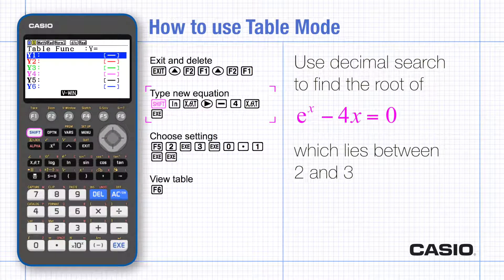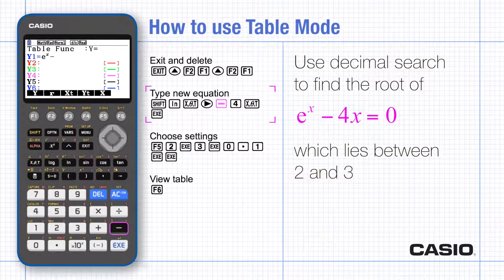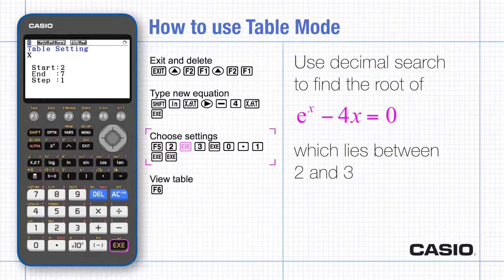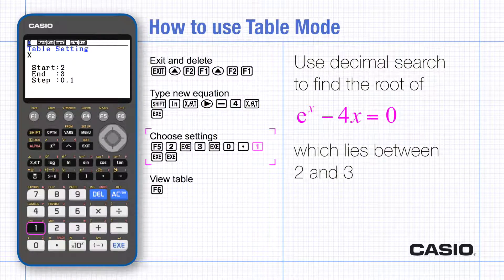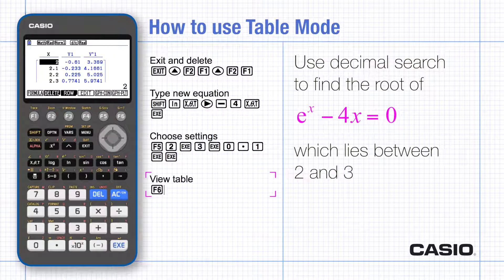And now type in the function which is equal to zero in the equation to be solved. Choose settings for the start and the end and the step size and execute.